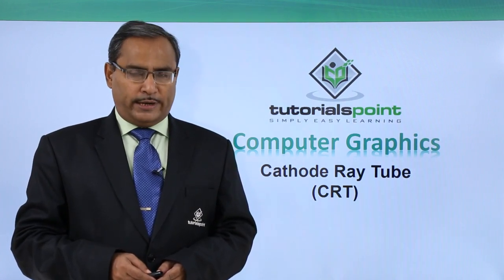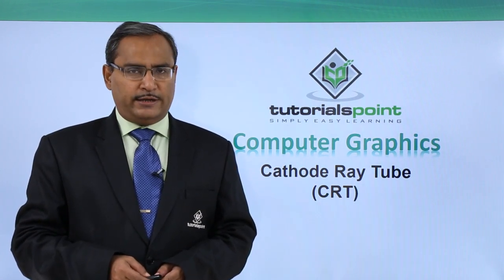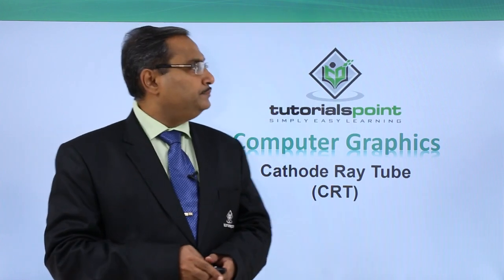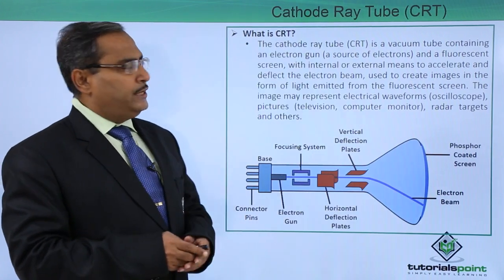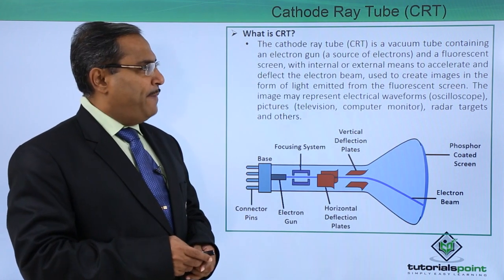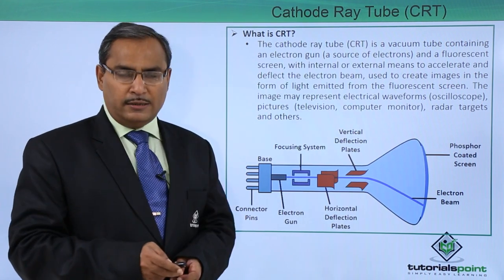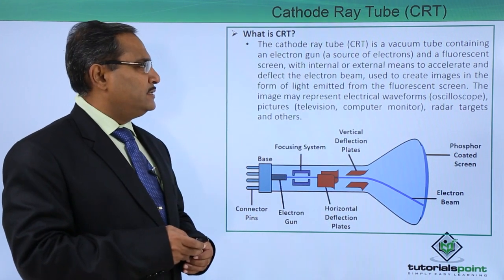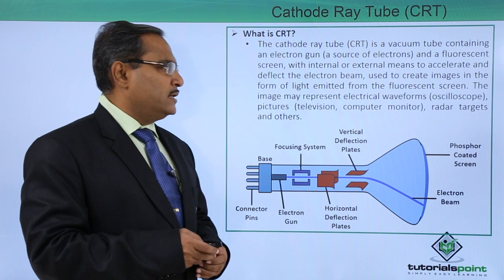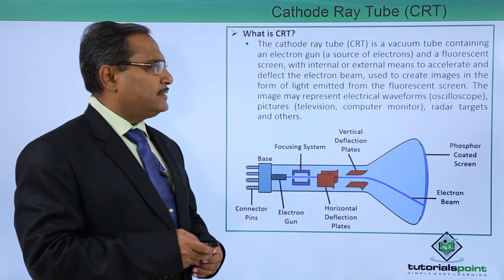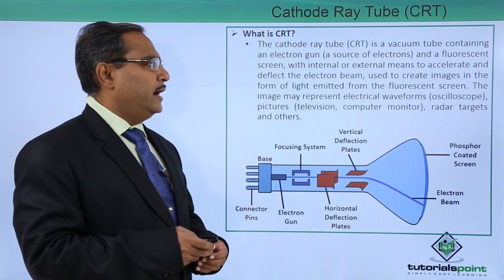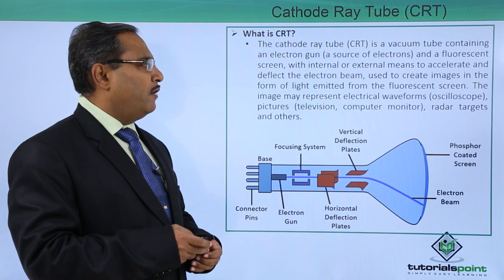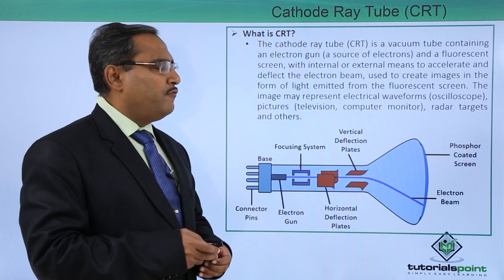We are going to discuss the cathode ray tube, also called in abbreviated form as CRT. The cathode ray tube CRT is a vacuum tube containing an electron gun, which is nothing but the source of electrons, and a fluorescent screen with internal or external means to accelerate and deflect the electron beam, used to create images in the form of light emitted from the fluorescent screen.